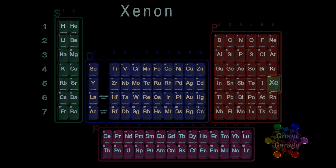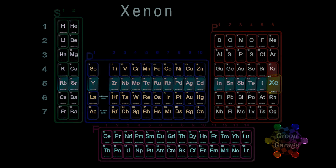Highlight Xenon and all the elements in the row to the left — the entire row. From the previous row, Period 4, we write the noble gas Krypton, shorthand Kr.